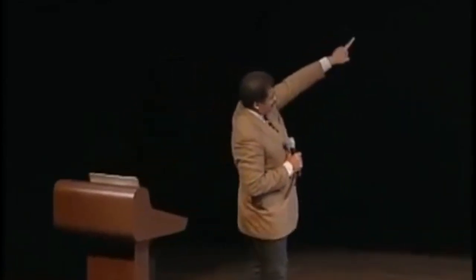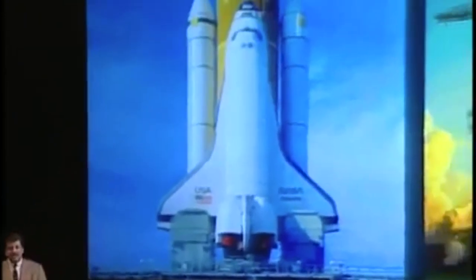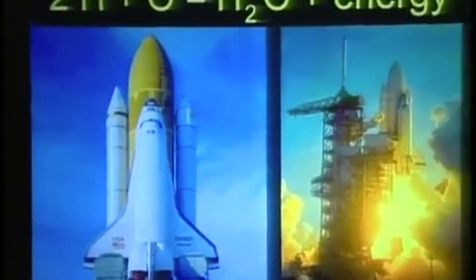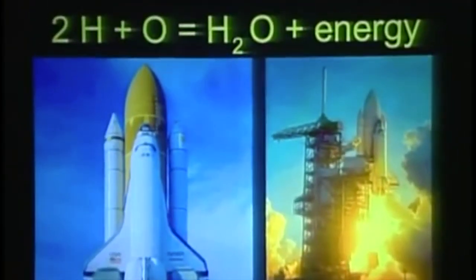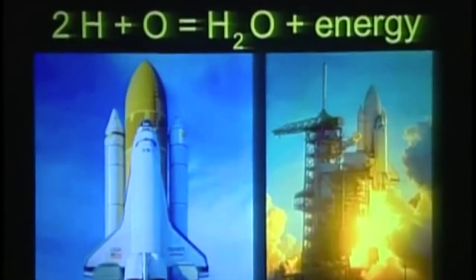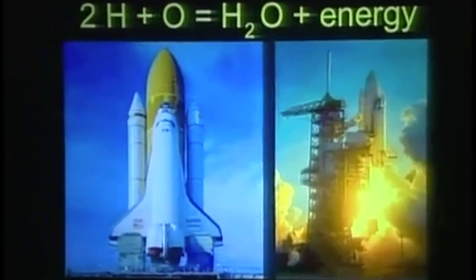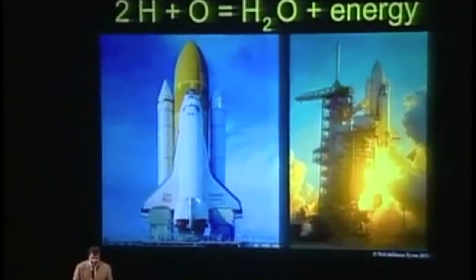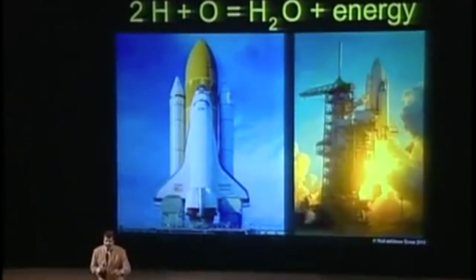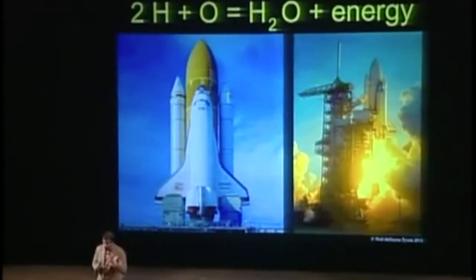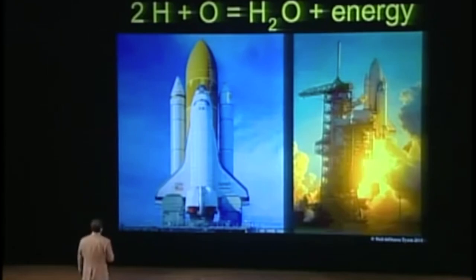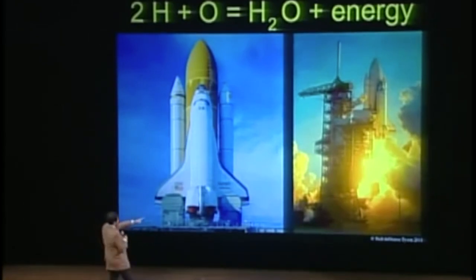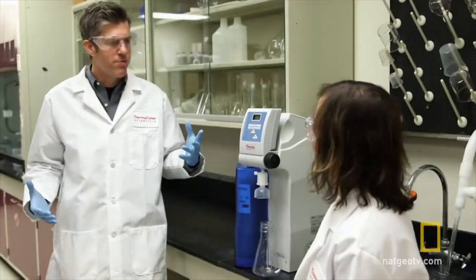Did you know that the orange tank of the space shuttle has two tanks within it — one twice as large as the other? The big one contains hydrogen, the little one contains oxygen. Bring them together and the exhaust of that reaction is H2O, otherwise known as water — that is the very simple chemical formula for what's going on at the business end of the space shuttle.